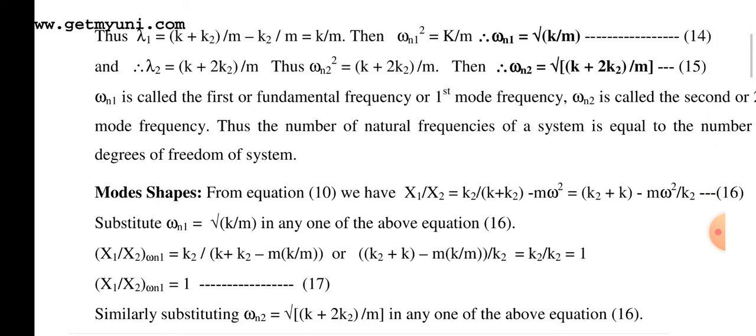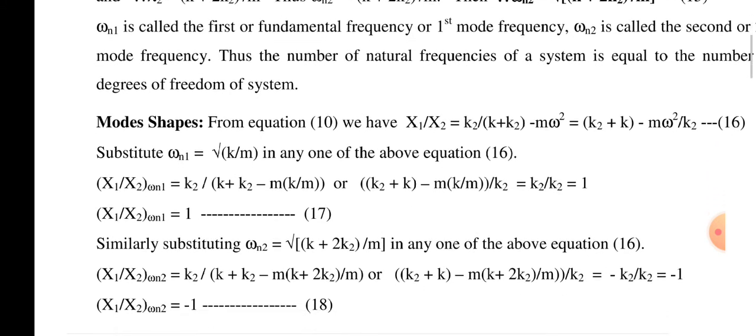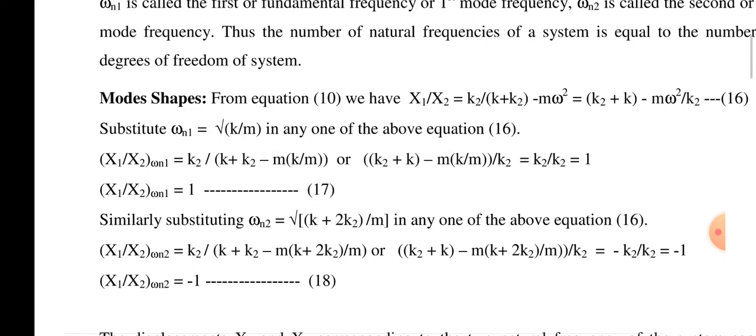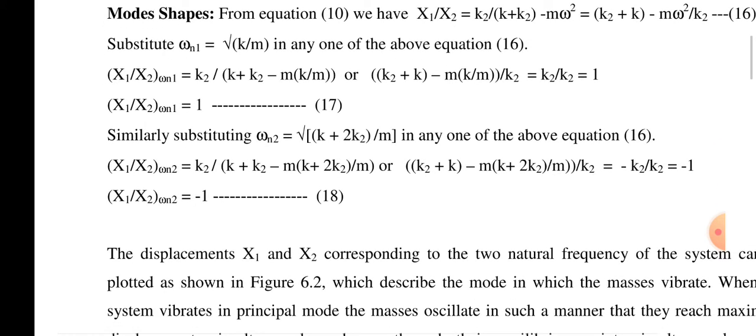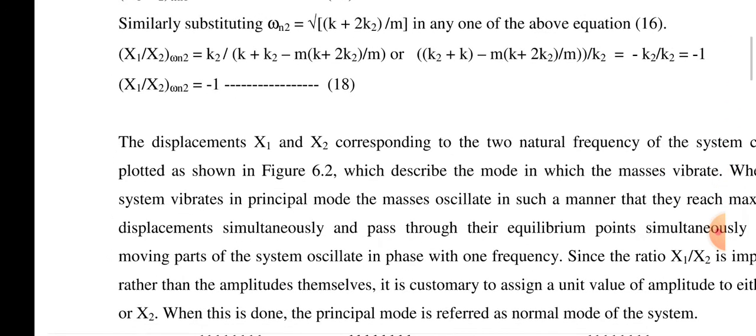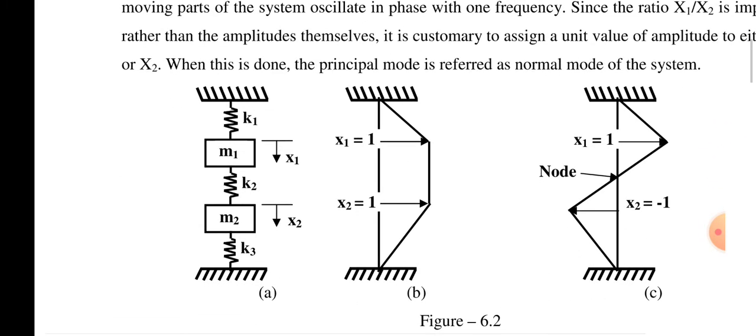Solving the frequency equation, we get the natural frequencies: ωn1 = √(k/m) and ωn2 = √((k + 2k2)/m). The mode shapes are x1/x2 = k2 / (k1 + k2 − m·ω²), and for the second mode ωn2, x1/x2 = −1.